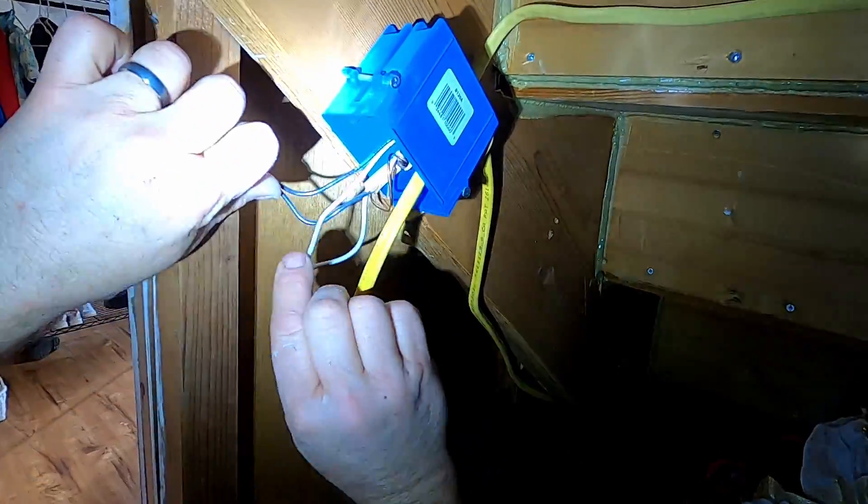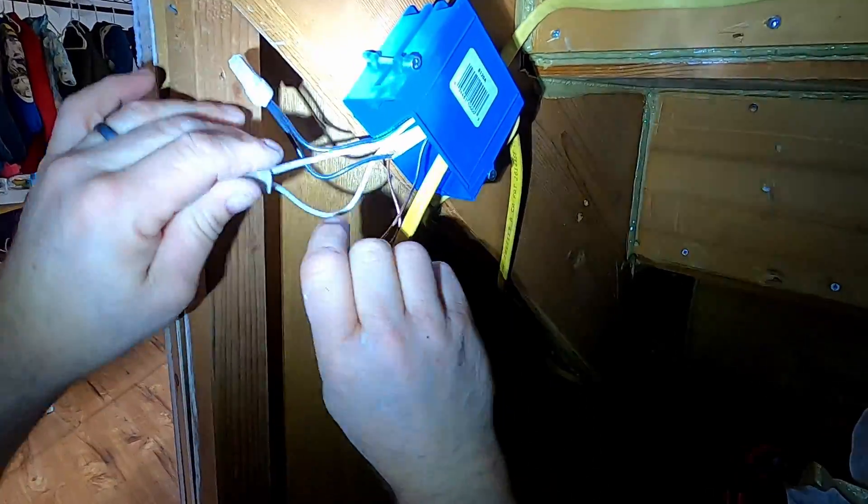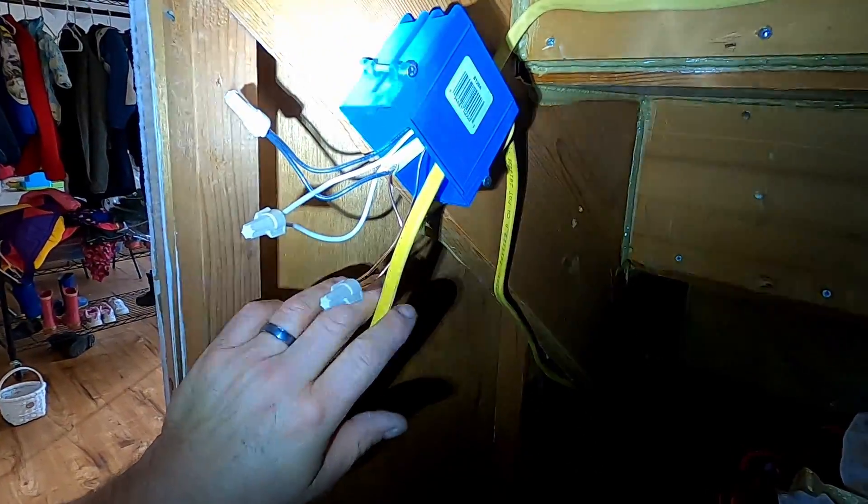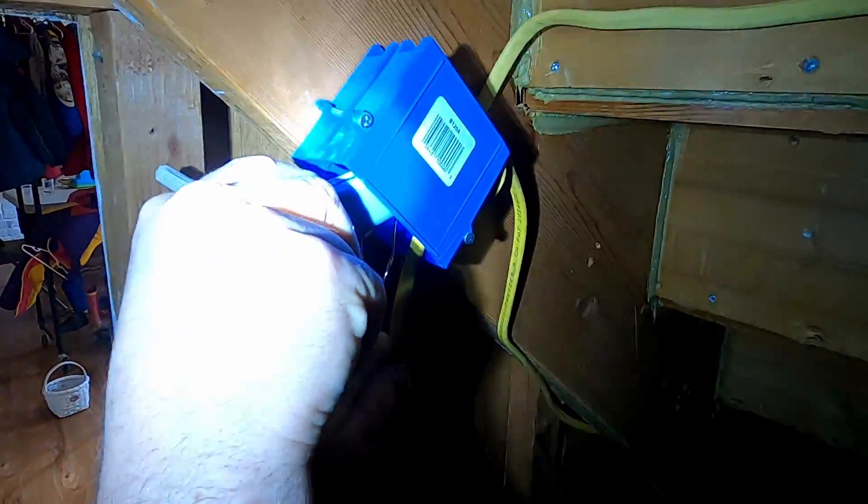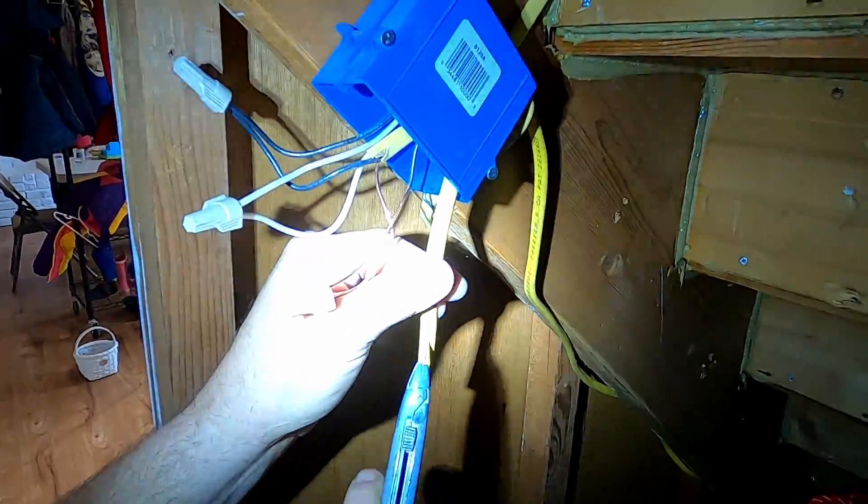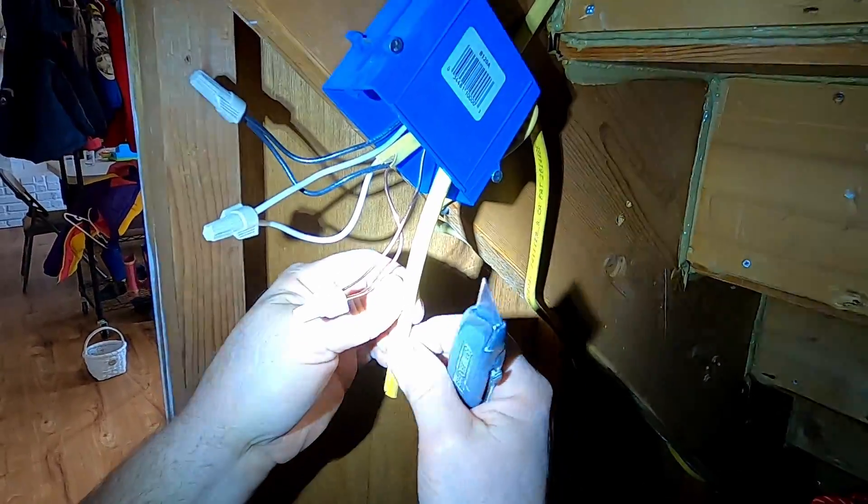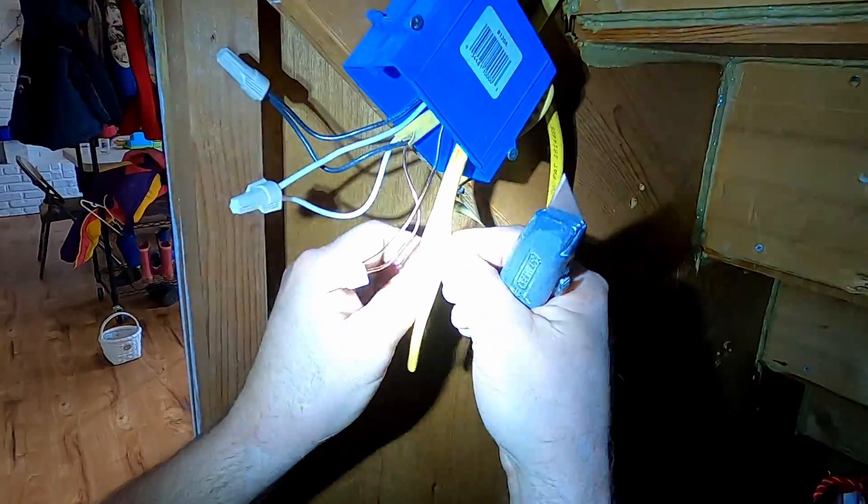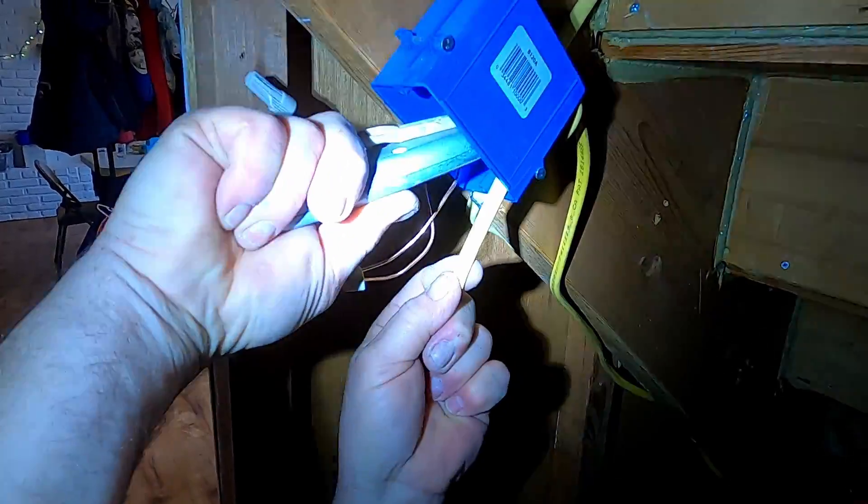This is the circuit I shut off at the panel. I'm going to strip this. When you cut this, you just cut real light because you just want to cut this outside protection coating. You don't want to cut into any of the wires.